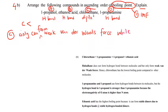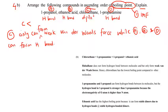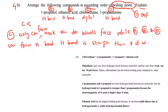While compounds A, B, and D can form hydrogen bonds, and hydrogen bond is stronger than London dispersion or dipole-dipole forces, so C is placed lowest in the order.